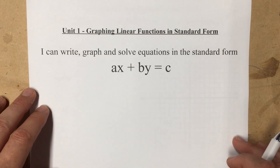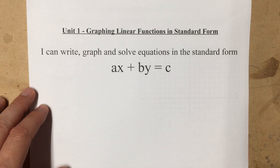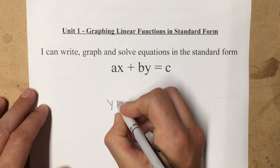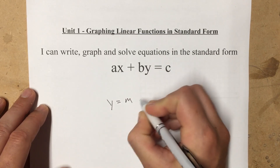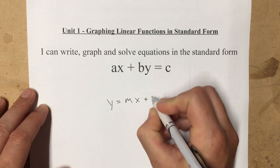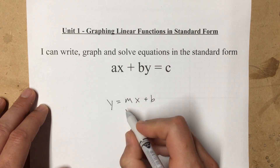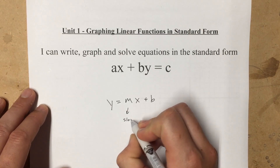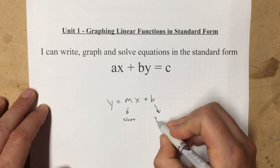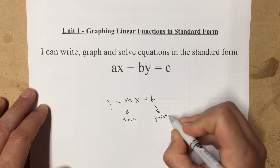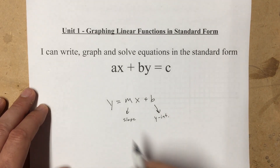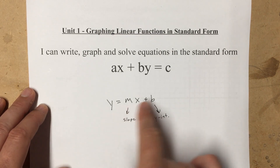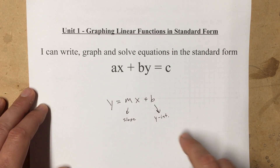Most of us are probably more familiar with slope-intercept form of a linear function, which would be written as y equals mx plus b, where m is your slope and b is your y-intercept, and you have your variables x and y. Most of us are familiar graphing in this form.